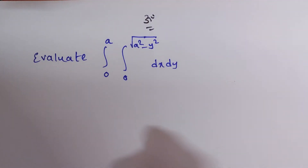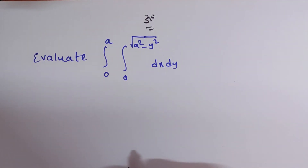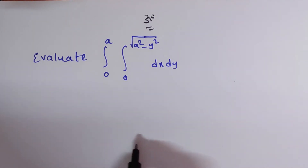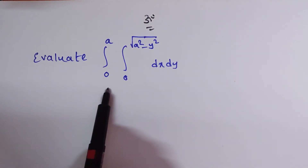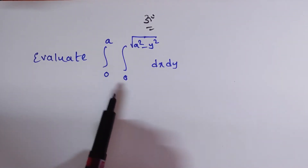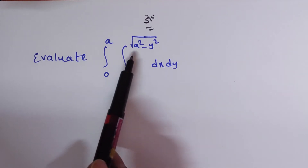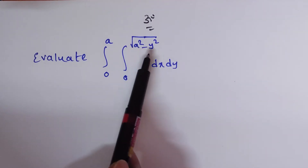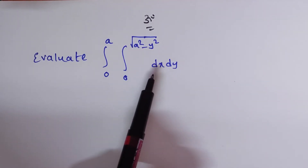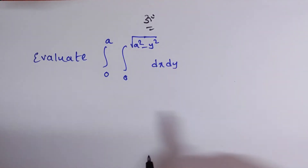Hi friends, welcome back to Team Education. In this video we are solving a problem on multiple integrals. The given problem is: evaluate the integral from 0 to a, integral from 0 to √(a² − y²) dx dy.